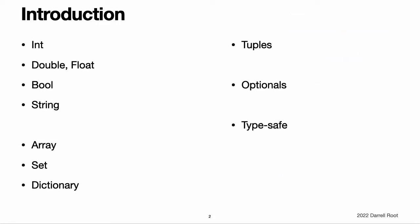Swift is a new programming language for iOS, macOS, watchOS, and tvOS app development. Many parts of Swift will be familiar from your experience of developing in C and Objective-C. Swift provides its own versions of all fundamental C and Objective-C types, including Int for integers, Double and Float for floating-point values, Bool for boolean values, and String for textual data.